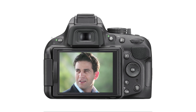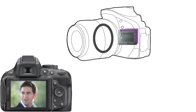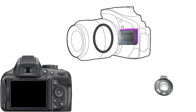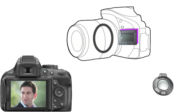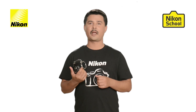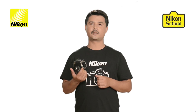Here you can see in this animation wherein the shutter is not open until you press the shutter release button. Once you press the shutter release button, the light passes through the lens and hits the image sensor, and that's how the image gets recorded in your camera.